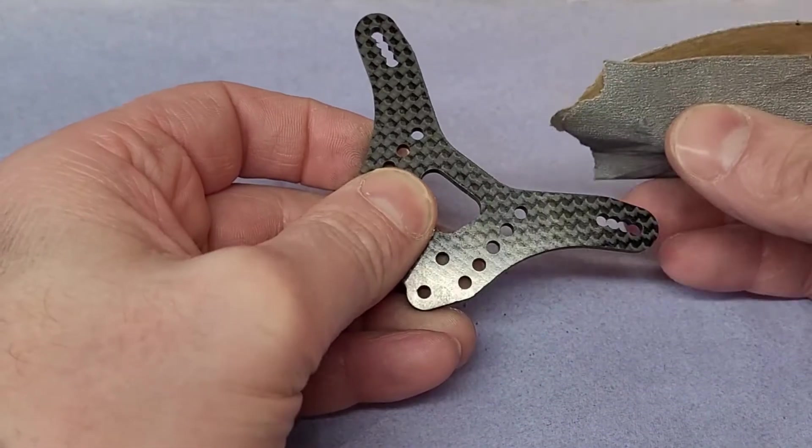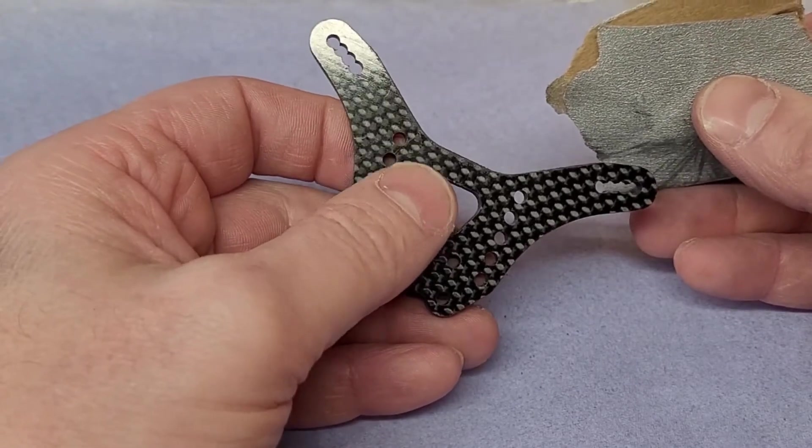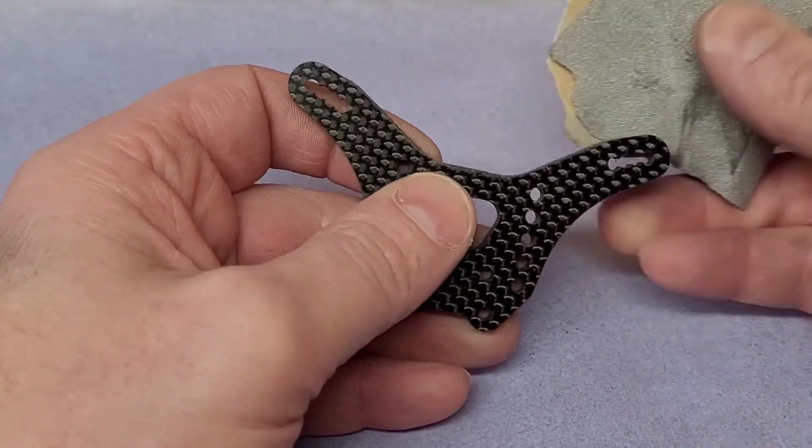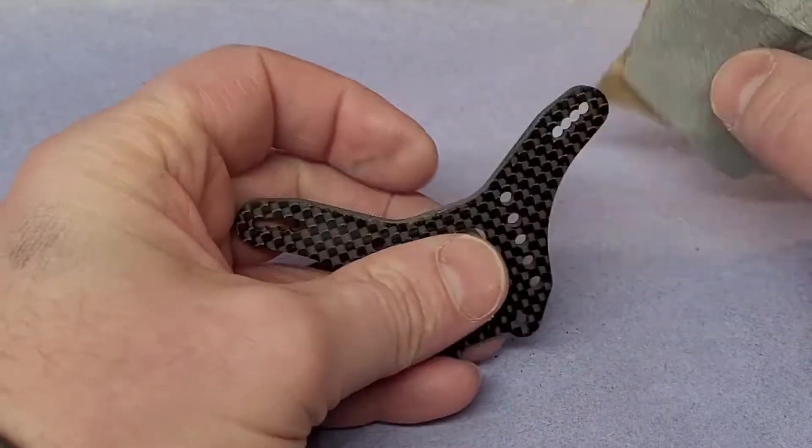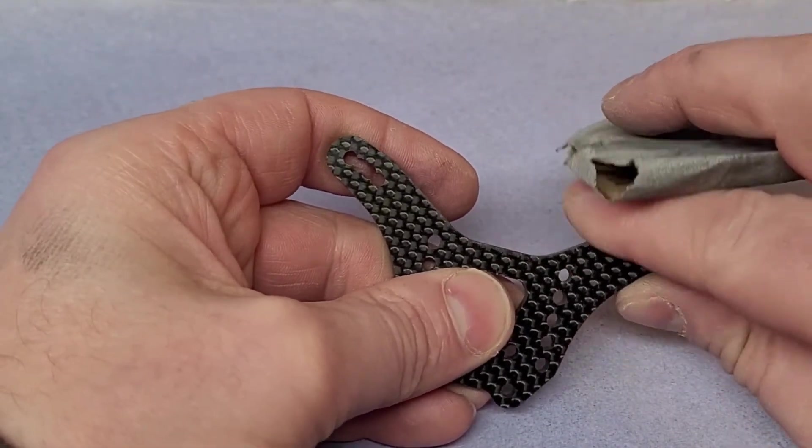You need to be careful. Carbon fiber dust is horrible stuff, so you want to make sure you're not going to be breathing any of these particles in. It really is horrible stuff. You just want to rub it down until you get a nice smooth edge on there so it doesn't feel sharp to the edge of your finger.